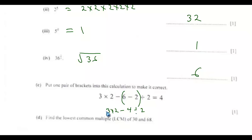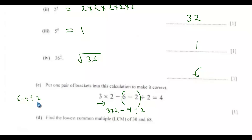After the brackets, the next operations are multiplication and division, done left to right. So multiplication first: 3 by 2 gives 6. Now we have 6 minus 4 divided by 2. The division gives 2, then 6 minus 2 equals 4. So dividing 4 by 2 gives 2, and 6 minus 2 equals 4, which is the final answer.